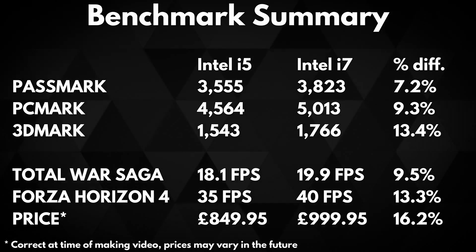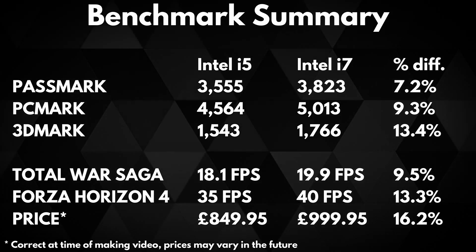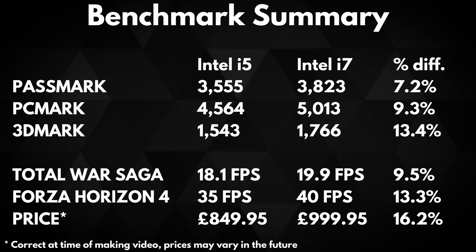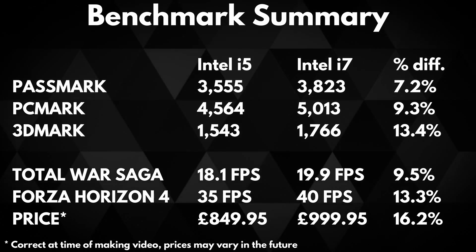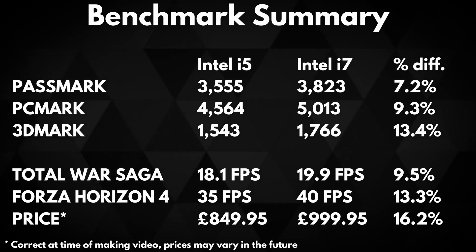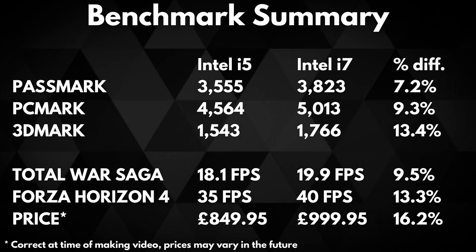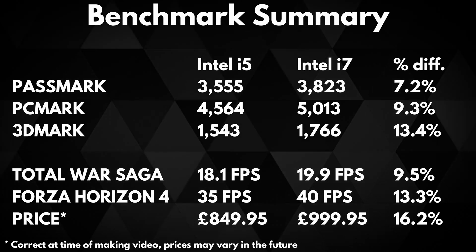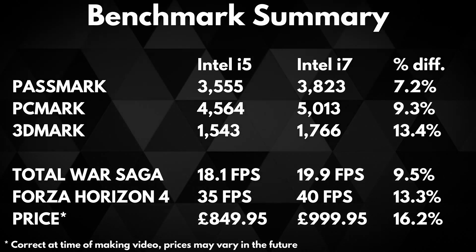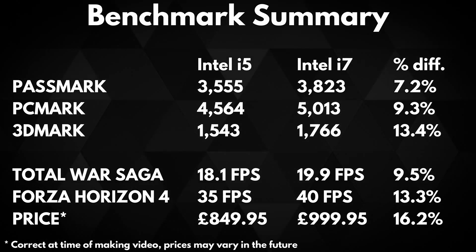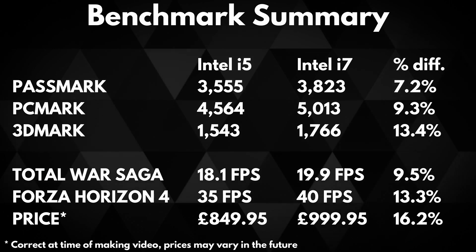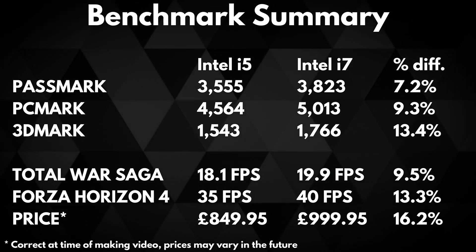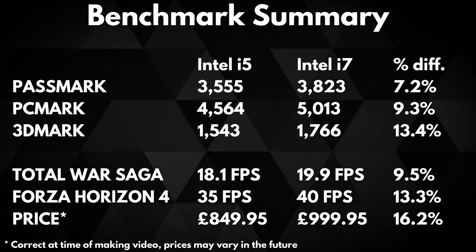In terms of cost, the GPD Win 3 is available at Droix at the time of making this video in both i5 and i7 configurations for $849.95 and $999.95 respectively — that's around a 16.2% difference.